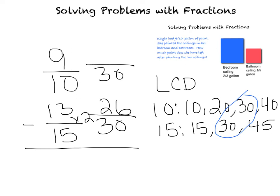Now I do the same thing on this problem. Ten times what equals thirty? I know that ten times three equals thirty. So nine times three is twenty-seven. Now we subtract, because I have my equivalent fractions. Twenty-seven thirtieths is equivalent to nine tenths, and twenty-six thirtieths is equivalent to thirteen fifteenths. So I subtract twenty-seven thirtieths minus twenty-six thirtieths. My denominators are the same, so my denominator remains thirty. Then I subtract my numerators: twenty-seven minus twenty-six is one. So my final answer is one thirtieth.